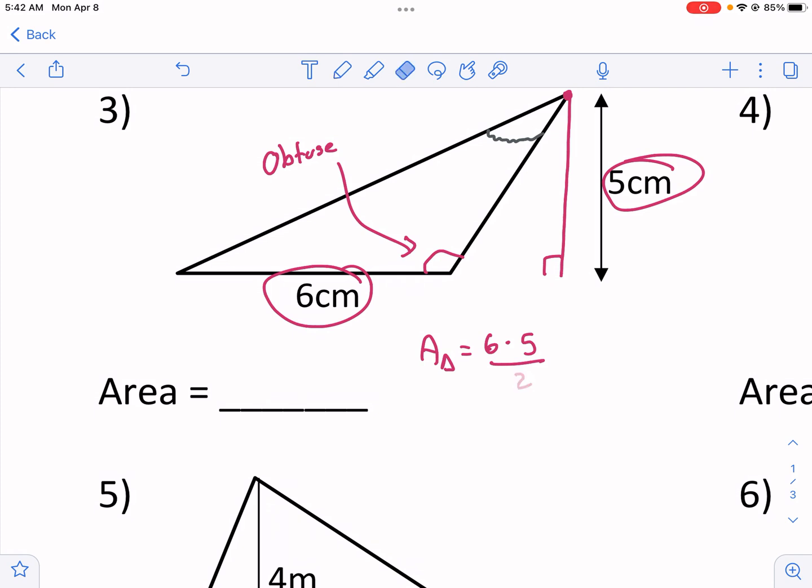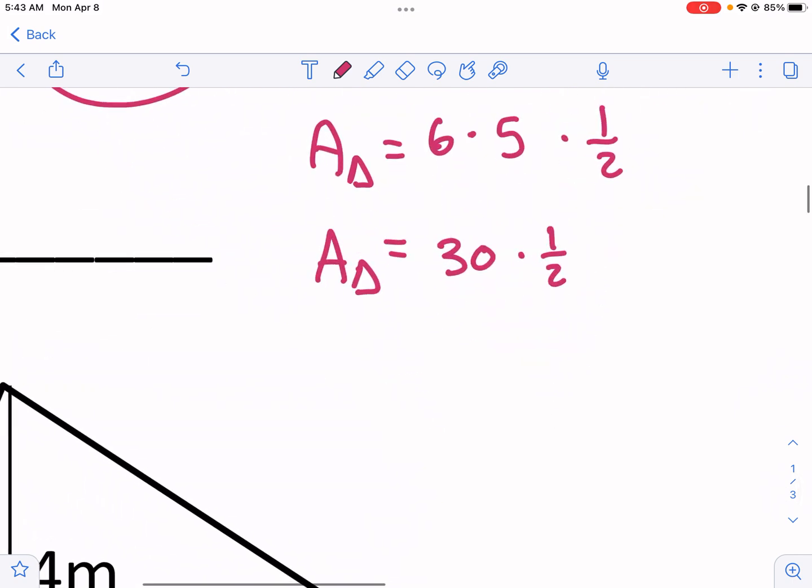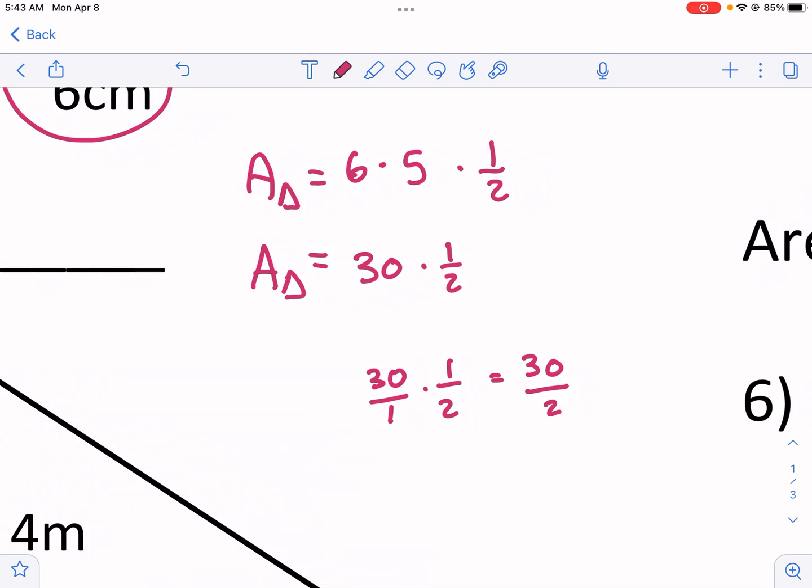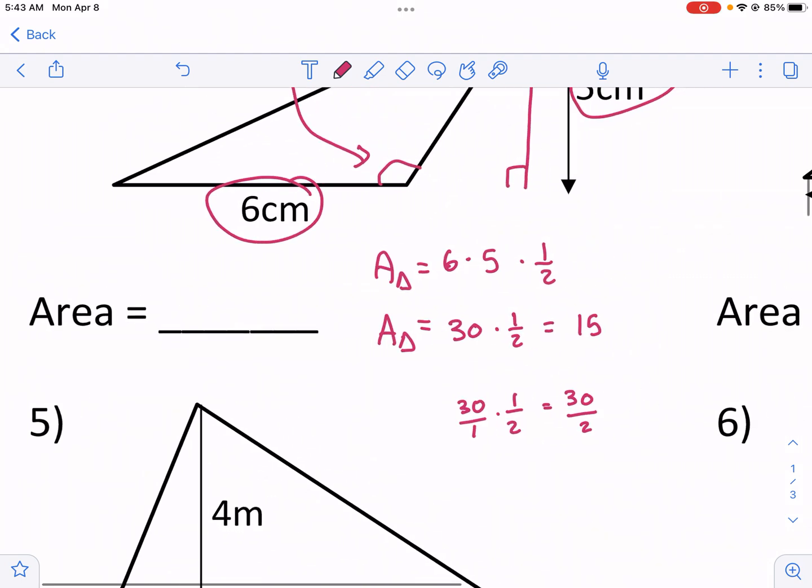So this is still our base 6. Area of a triangle equals 6 times 5, and then divide it by 2. Actually, I'm going to use the times 1/2 this time just to show you it works in any way you do it. So then we have area of a triangle equals 30 times 1/2. Now, if you're unfamiliar with multiplying by 1/2, you can just do this: 30/1 times 1/2 like that. And we do top times top, bottom times bottom. And you'll see that we get the same thing, 30 divided by 2, which is what I said earlier for the first formula. Anyway, regardless of how we do it, we're going to get 15, and then we make sure we have the correct units: centimeters squared.